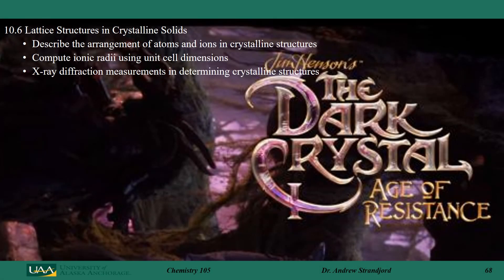The structure of a crystalline solid really depends on the size of the atoms or molecules that make up the crystalline structure, how many different types of atoms or molecules are contained in the crystalline structure, and the electronic nature of the materials that make up the crystal. We're going to talk about those crystalline structures in this last section of chapter 10.